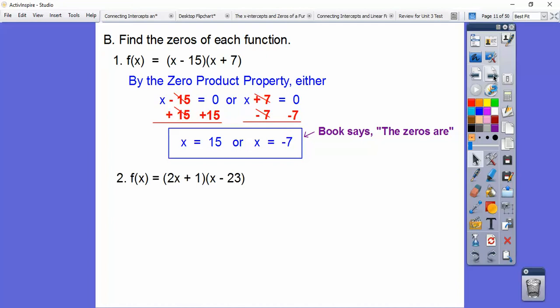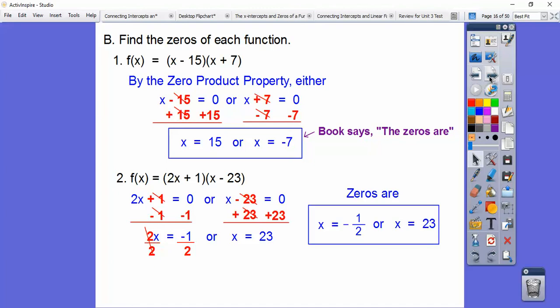Okay, so here's another one. So here we set these factors equal to zero. So here I'm going to do minus 1 minus 1. Here we'll do plus 23 plus 23. So there we go. And then we've got to do one more step here. Divide by 2, divide by 2. So when we divide by 2, we get negative 1 half. Okay, so our zeros are negative 1 half or positive 23.